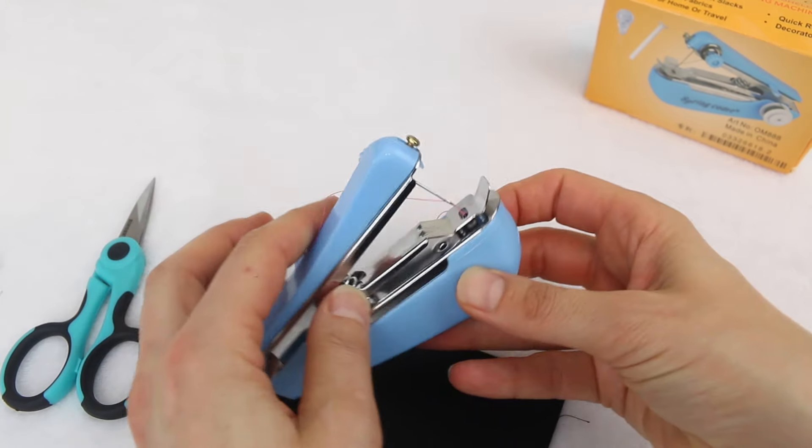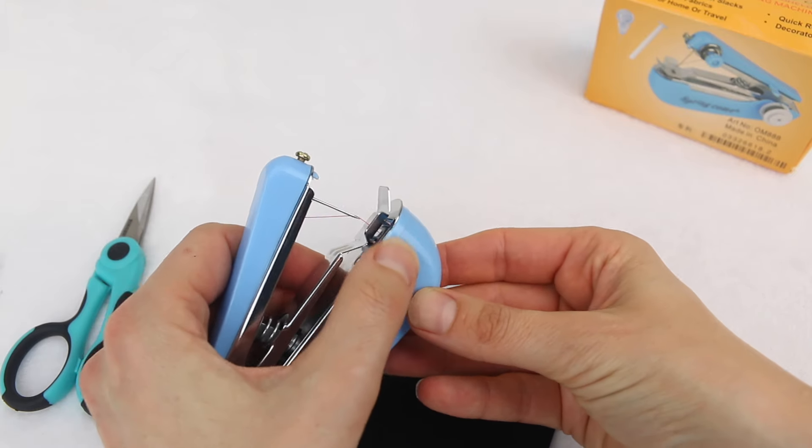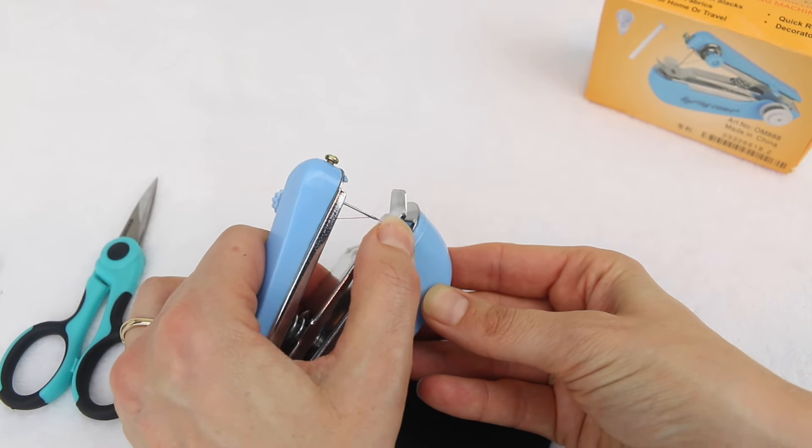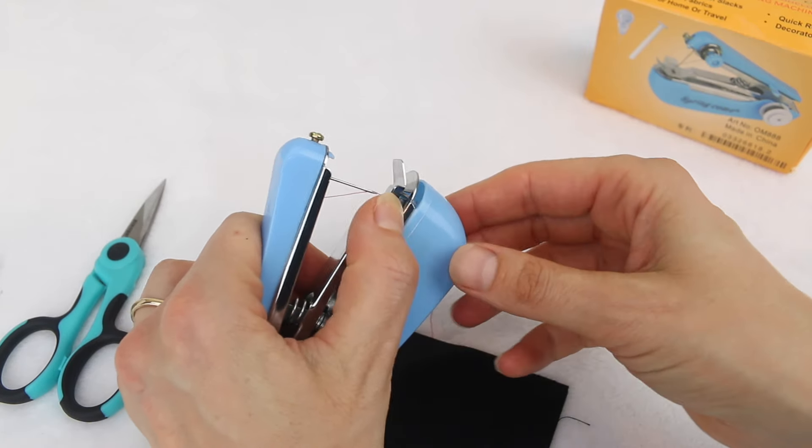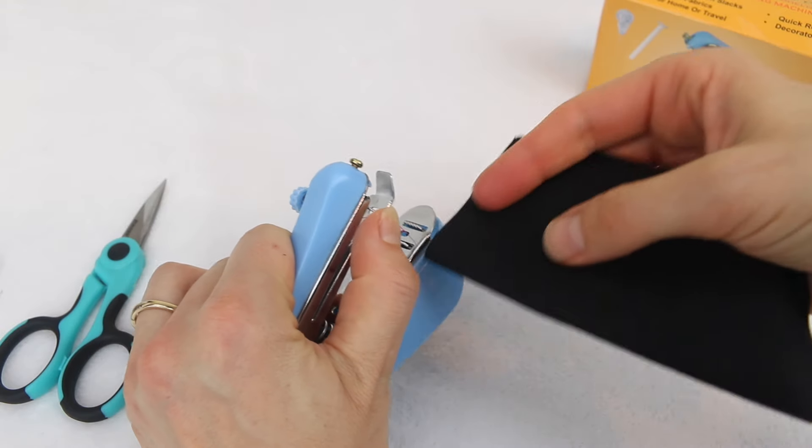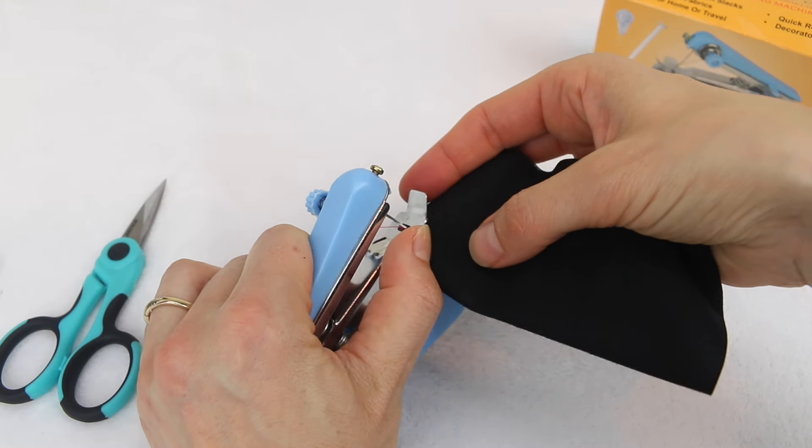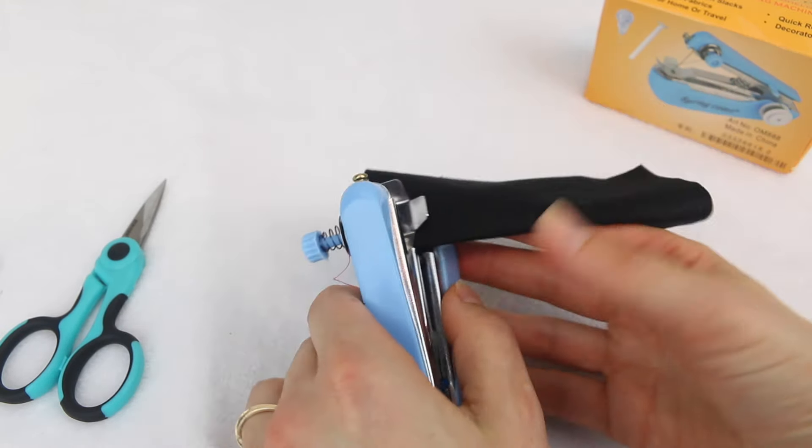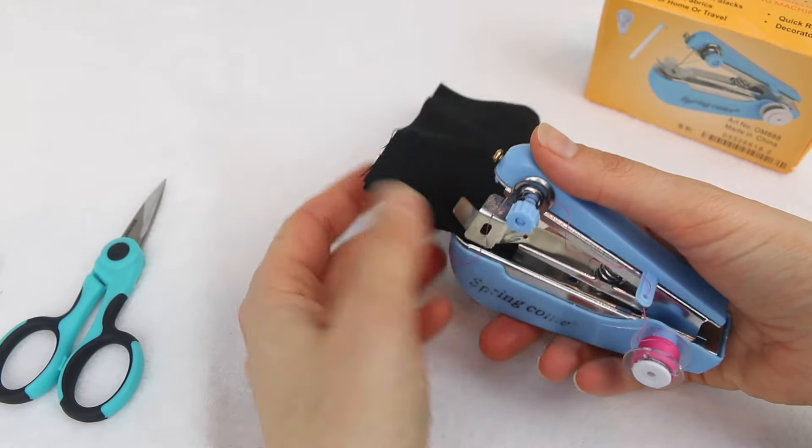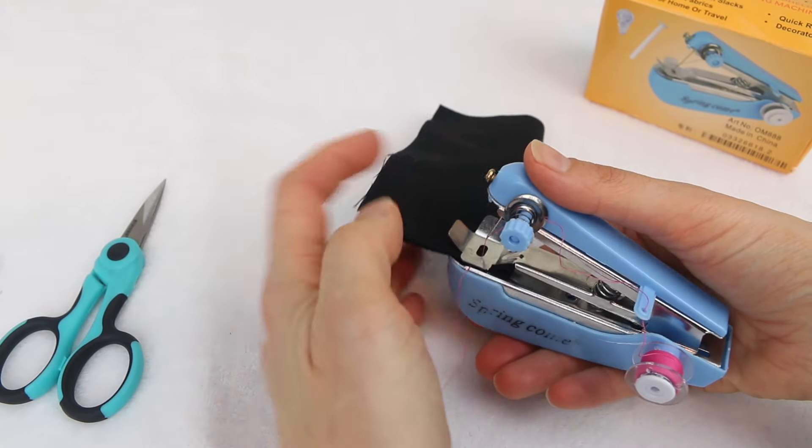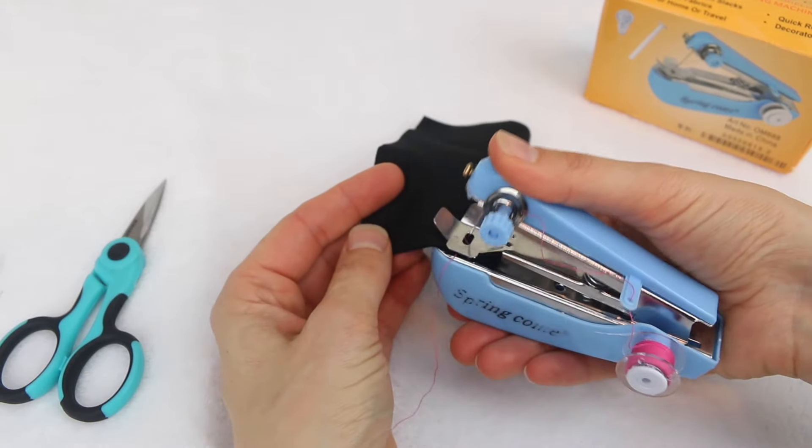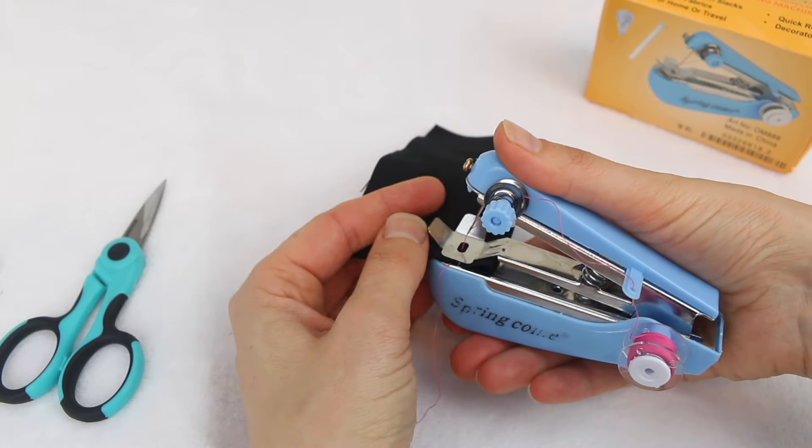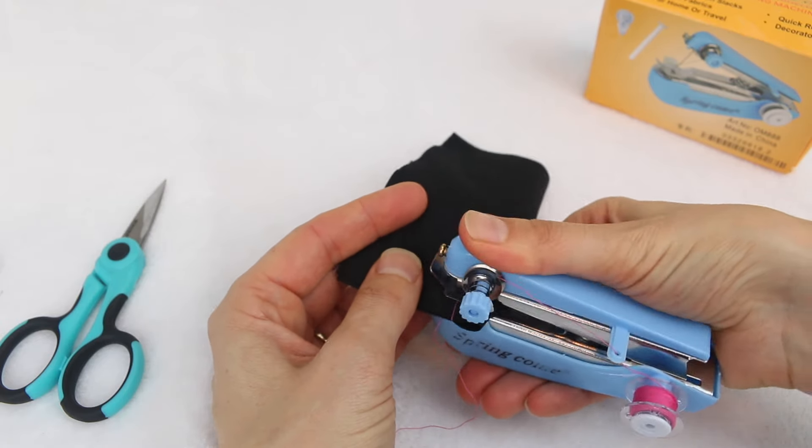So to get the fabric under, I'll just turn it this way so you can see. Now you can lift the fastening plate up like so and pop your fabric under. And then to stitch, you'd simply just push all the way down until you hear a click and then release it. You just keep repeating that.